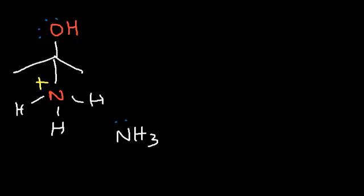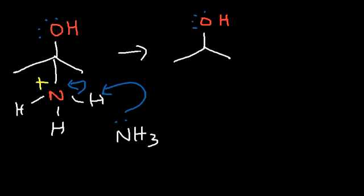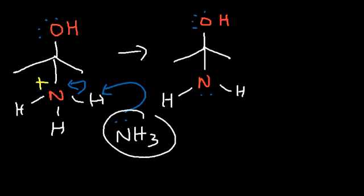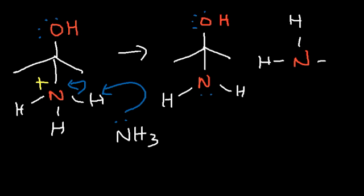We use that NH3 to remove a hydrogen from the nitrogen. The hydroxyl group is still a bad leaving group, so we need to add another hydrogen to it. Since ammonia has now re-acquired a proton (returning to ammonium form), it can transfer a hydrogen onto the hydroxyl group. The oxygen takes that hydrogen, causing the electrons to return back to the nitrogen.